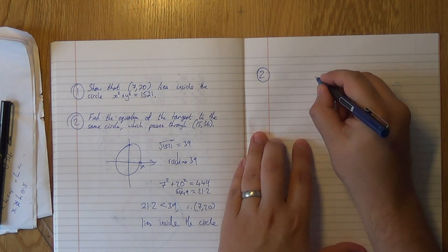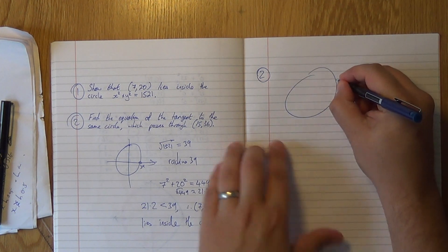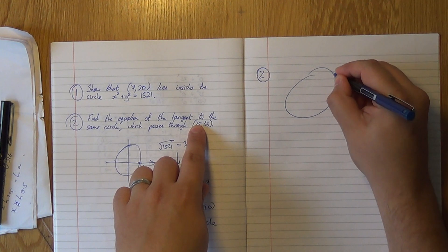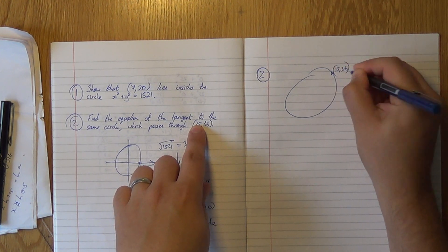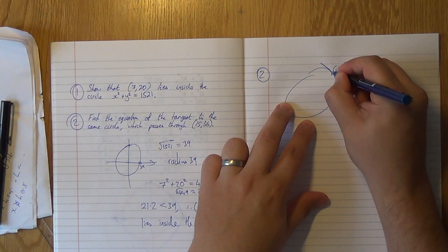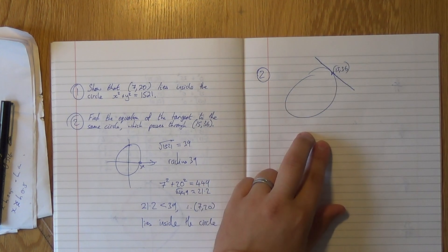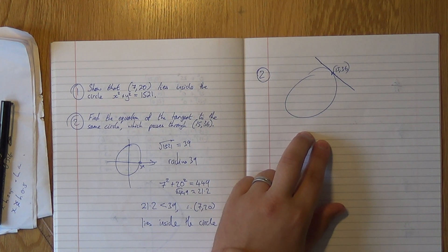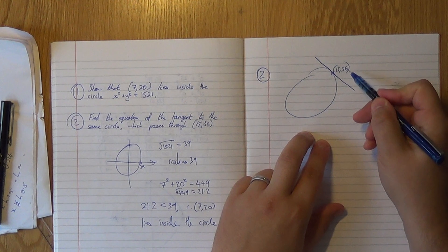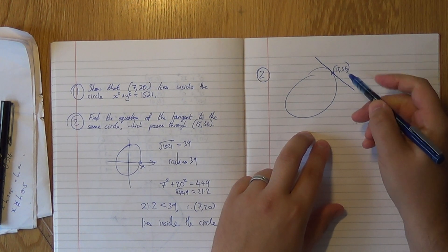So on this circle, there is some point (15,36) there, and there is some line that just touches the circle at that point. And it's this line that we want to find the equation of. So the equation of a line requires knowing the gradient and a point on it. We have the point, but we haven't got a gradient yet.